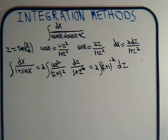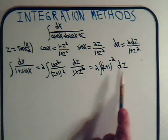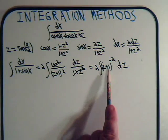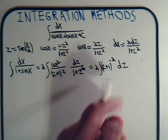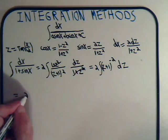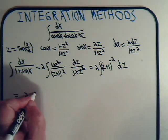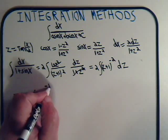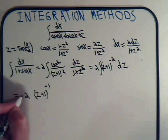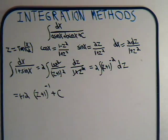If we let z plus 1 equal u, then dz equals du. So we have the integral of u to the minus 2 du. This would be equal to 2 times — we raise to the minus 2 plus 1 power — so we have z plus 1 to the minus 1 divided by minus 1, which makes this minus 2. Plus an arbitrary constant — that's the solution to this integral.